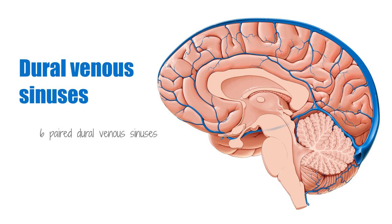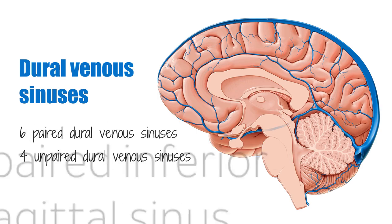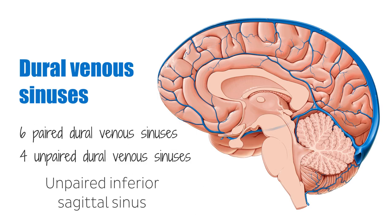There are six paired dural venous sinuses and four unpaired dural venous sinuses, and in this tutorial we will be looking at one of these dural venous sinuses, which is the unpaired inferior sagittal sinus.